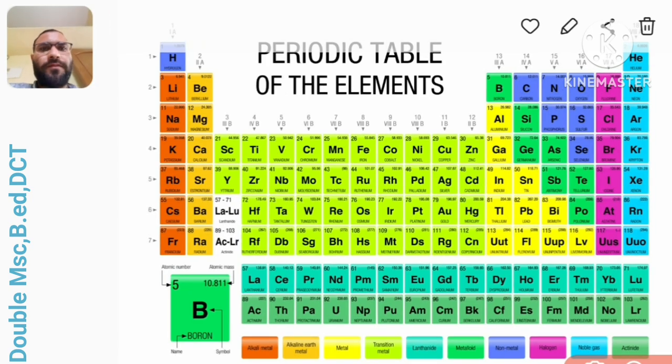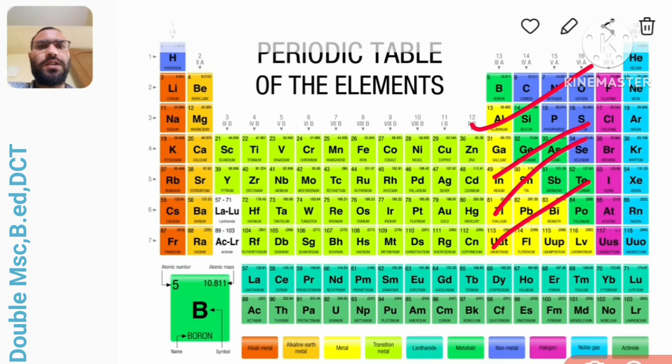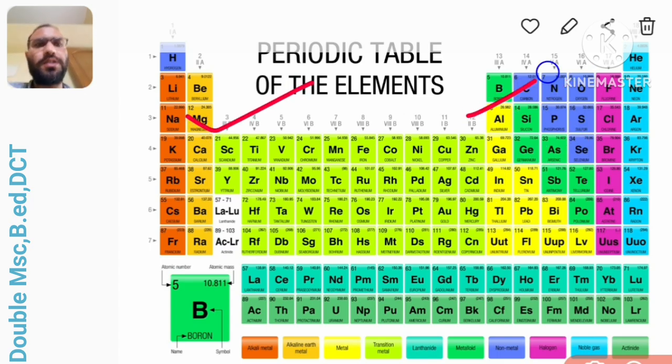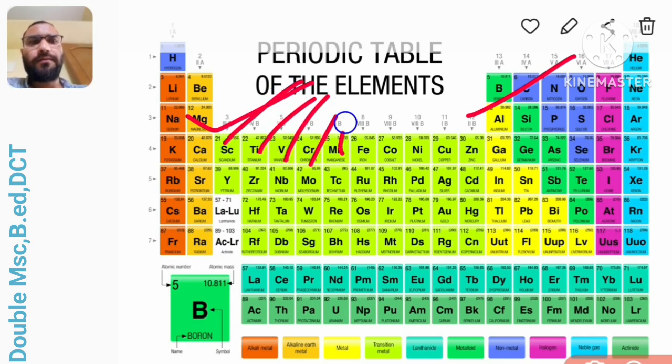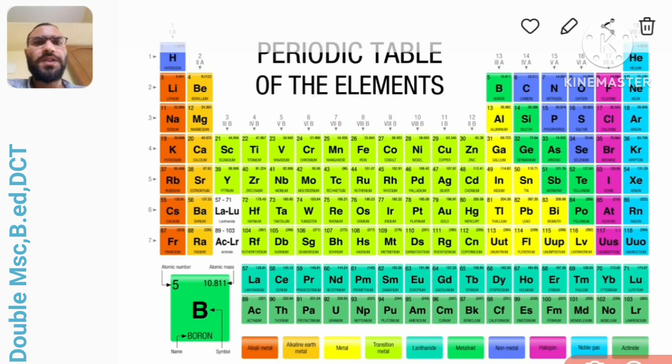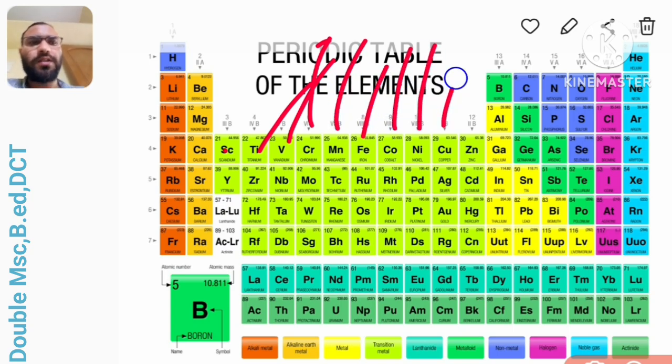Now coming to the d block we have four series: 3d series, 4d series, 5d series and 6d series. How to remember the 3d series, like this one scandium to zinc - this is called 3d series. Here you have to remember: siktai vicar manfi conai kuzar. Means scandium, titanium, vanadium, chromium, manganese, iron, cobalt, nickel, copper and zinc.